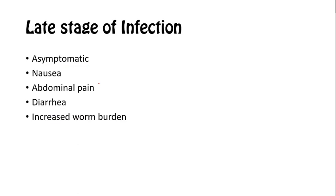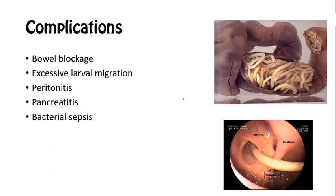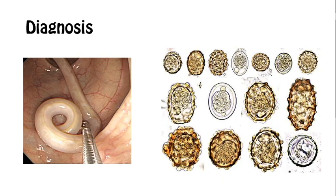In late stages, most people are still often asymptomatic, but patients may present with more serious symptoms like nausea, abdominal pain, diarrhea, and often patients will present with a greater worm burden. The complications of Ascaris are what makes it a serious condition. In cases wherein the worm burden is very high, bowel blockage may occur. Due to excessive larval migration with invasion of the biliary tree, it may cause inflammation and even more blockage, which may include peritonitis and pancreatitis. These worms may also carry fecal coliform to other sites, causing sepsis.